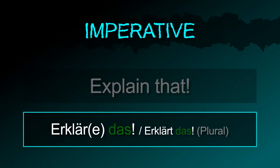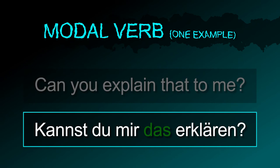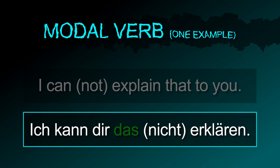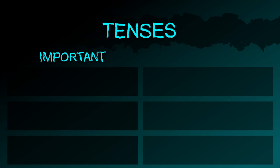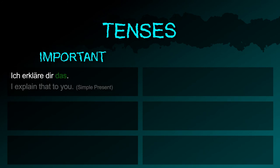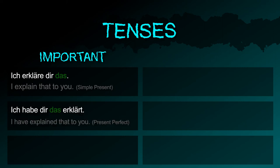Imperative: erklär das, erkläre das, or plural: erklärt das. Adding a modal verb: kannst du mir das erklären? Ich kann dir das nicht erklären. Important tenses — simple present: ich erkläre dir das. Present perfect: ich habe dir das erklärt.